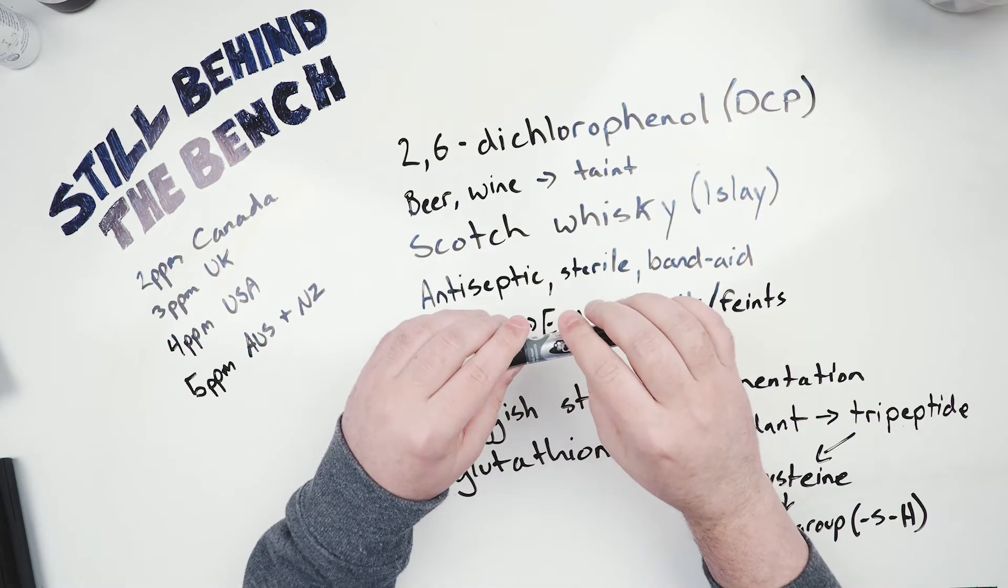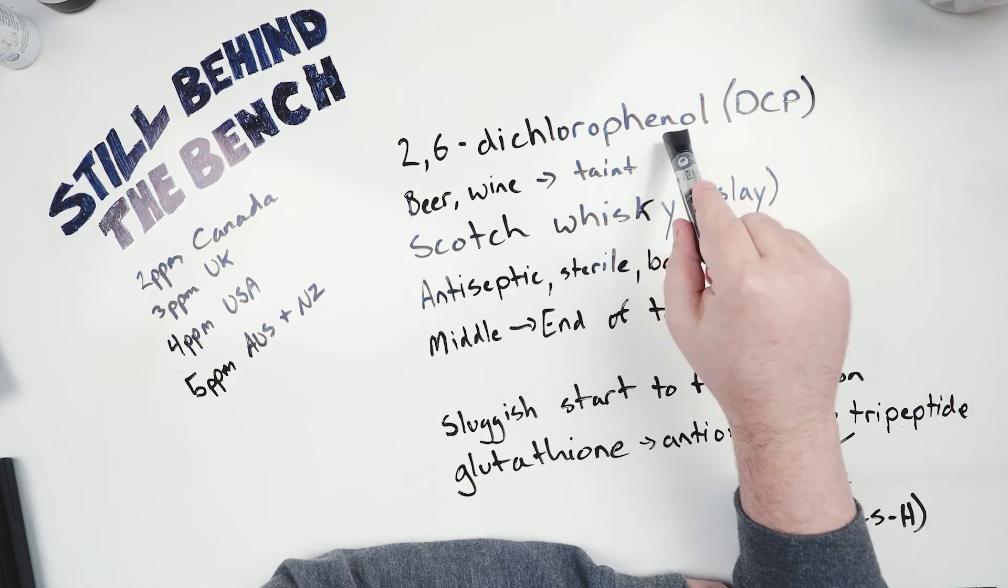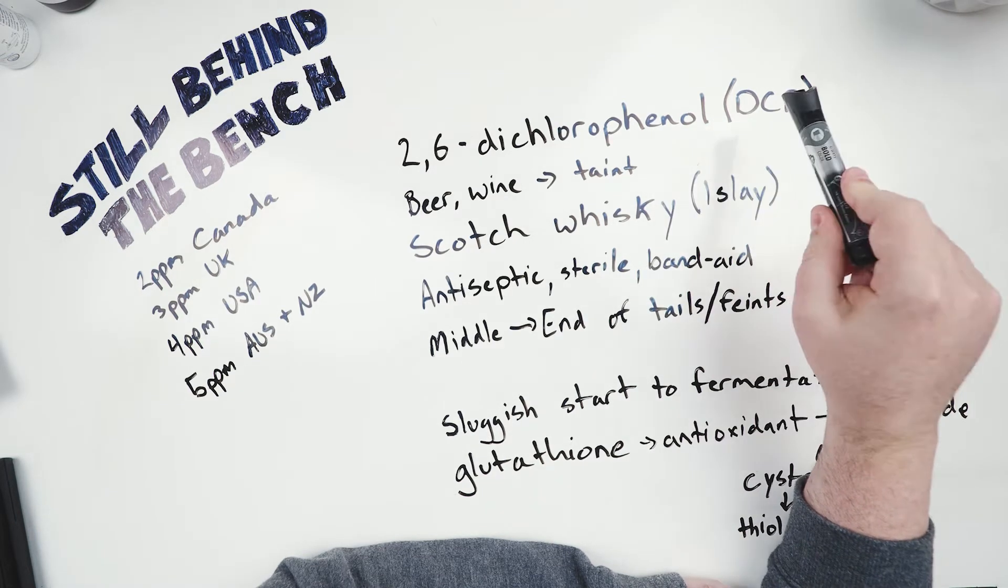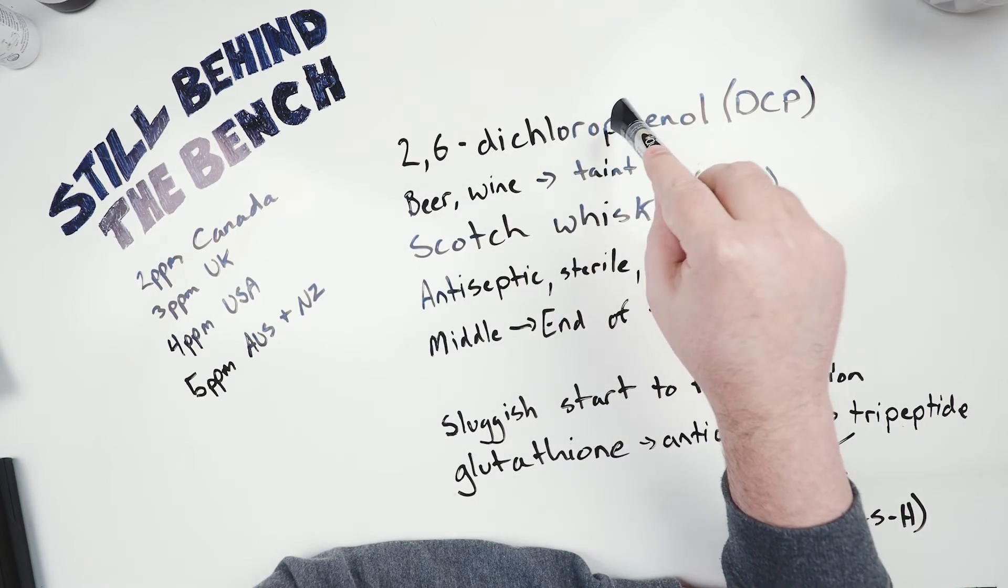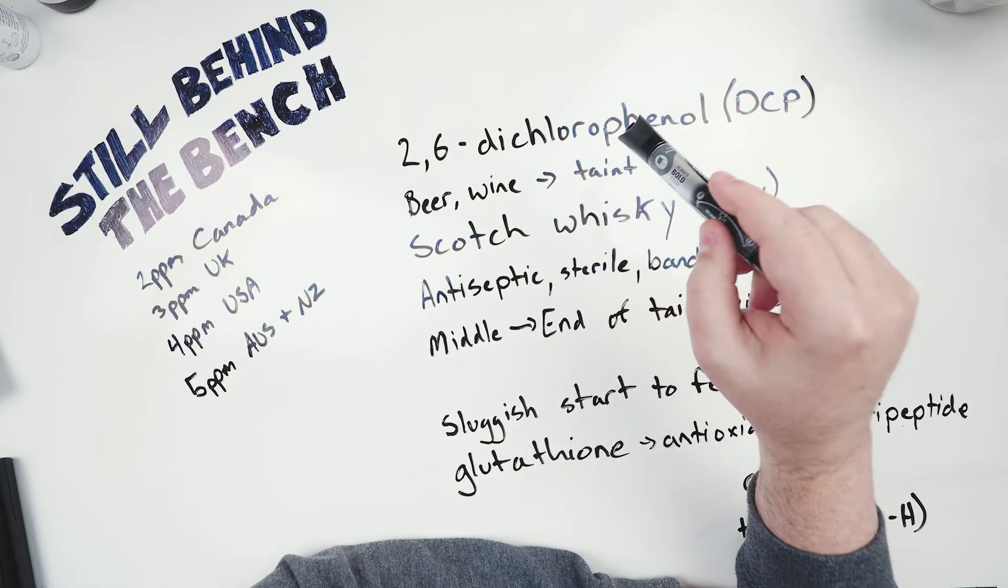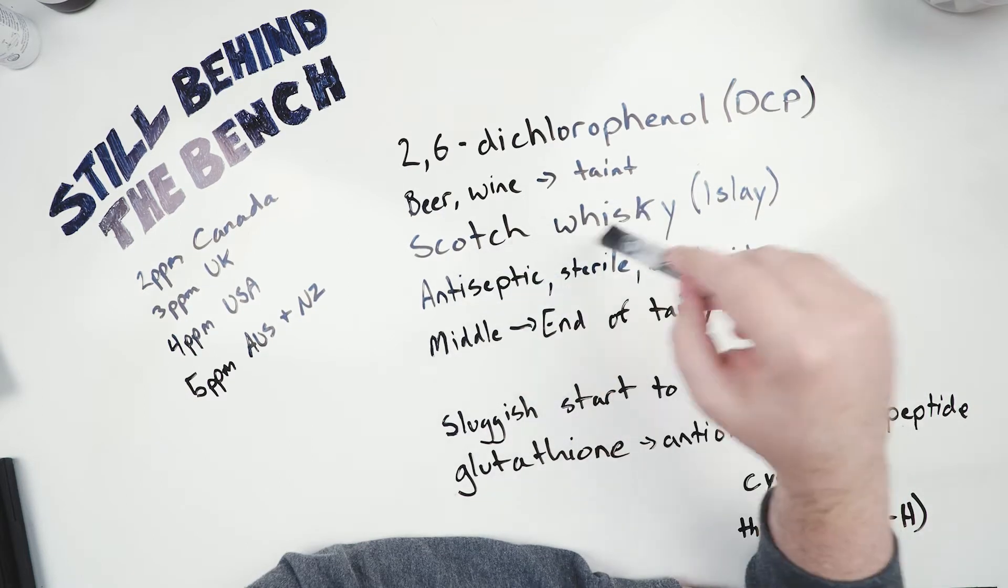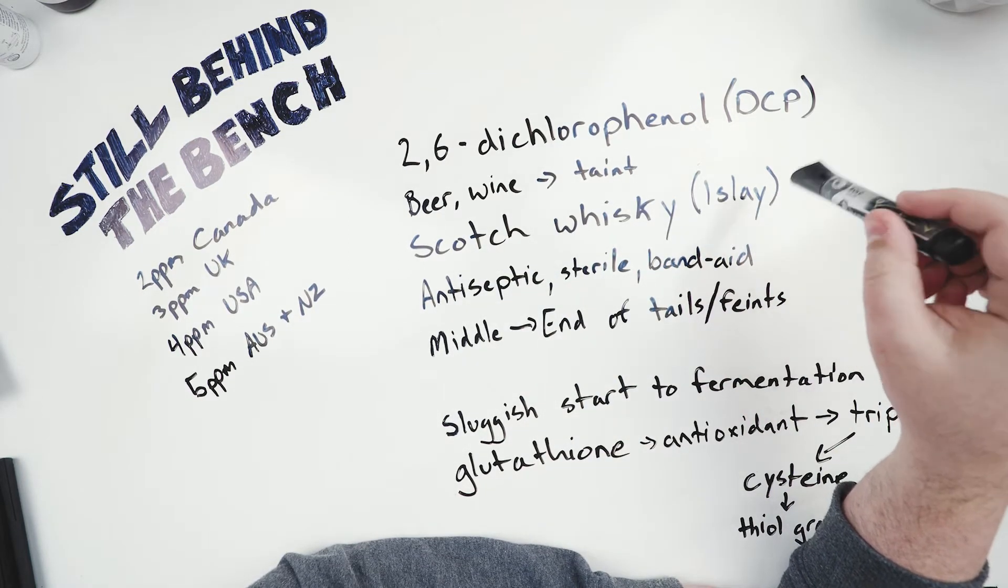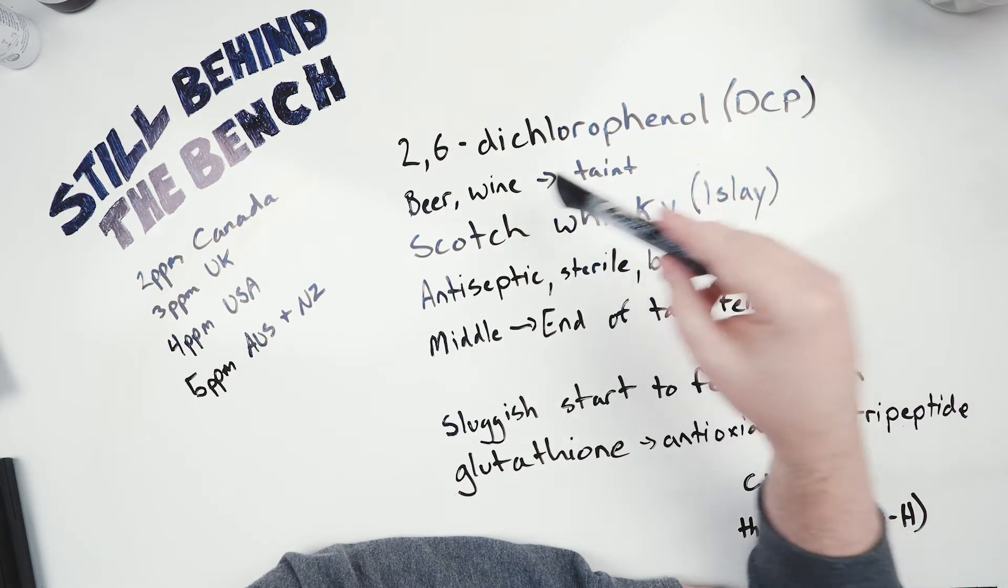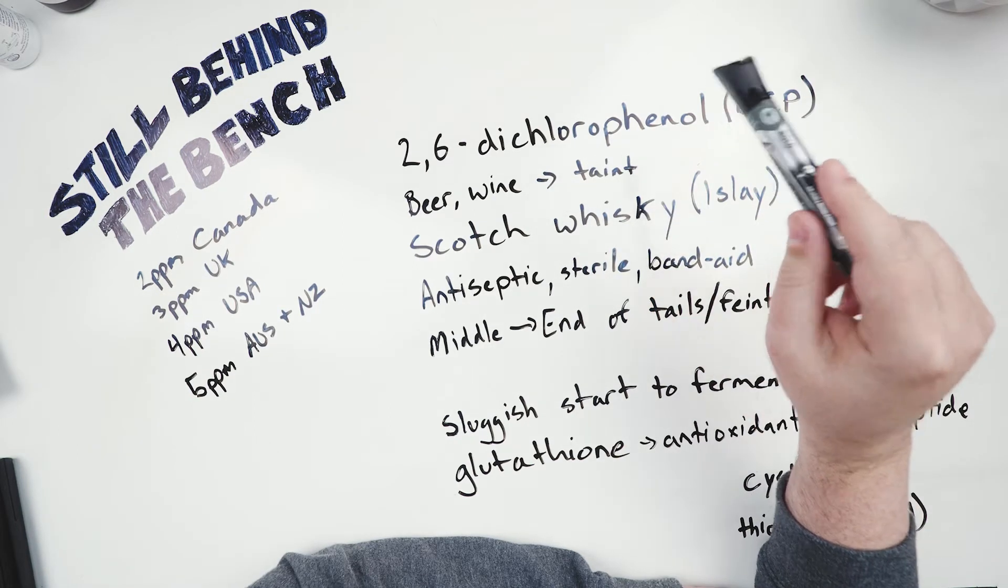Okay so the main issue with chlorine and chloramine in your water is going to be the creation of this phenolic compound here 2,6-dichlorophenol sometimes referred to as DCP. A major problem with the creation of this compound is you won't really know until you're finished distilling. In beer and wine it's considered a tainting compound. Some people enjoy the flavor of DCP especially when it's part of a scotch whisky from Islay the Hebrides island off of the coast of Scotland mostly because it is actually also created during the drying process of malted barley when they use peat smoking.